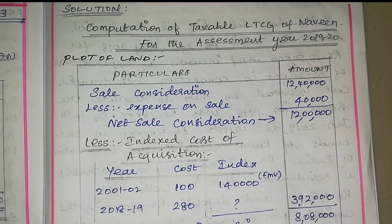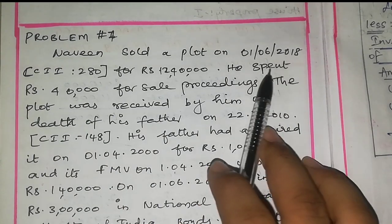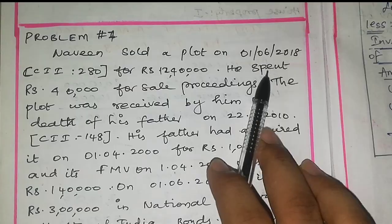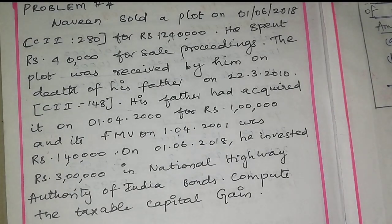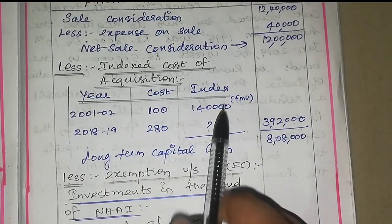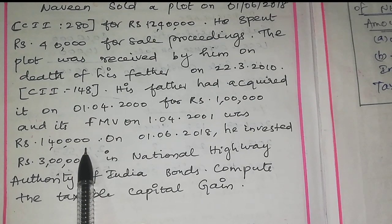Let's determine short term and long term. The asset was acquired in 2000 and sold in 2018. For land, if it is held for more than 2 years it is long term, less than 2 years is short term. So this is a long term capital asset. Since the asset was acquired before 1-4-2001, we consider the fair market value on 1-4-2001 as the cost of acquisition.